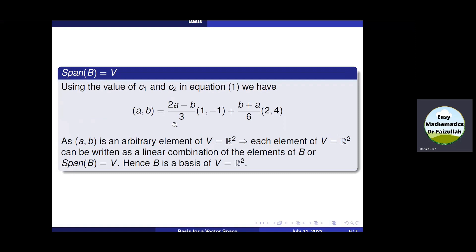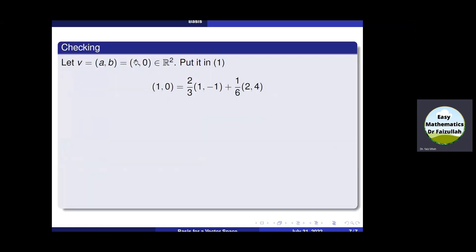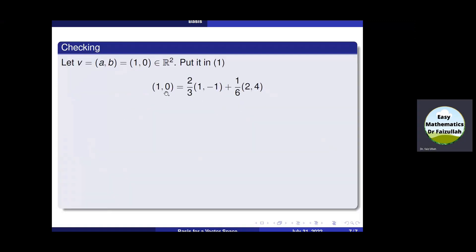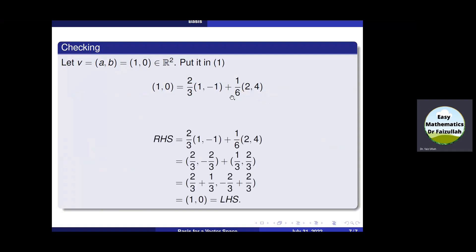Since both properties are satisfied, we say B is the basis of R². Let us verify that any element of R² can be represented as a linear combination of these two elements. Take any element from R², for example (1, 0) — students can also try (2,3), (4,7), (10,100), or (1000, 10000). Put the values of a and b into the equations for C1 and C2, substitute back, multiply each basis vector by its scalar, add the corresponding components, and after simplification we recover the original element on the left-hand side.